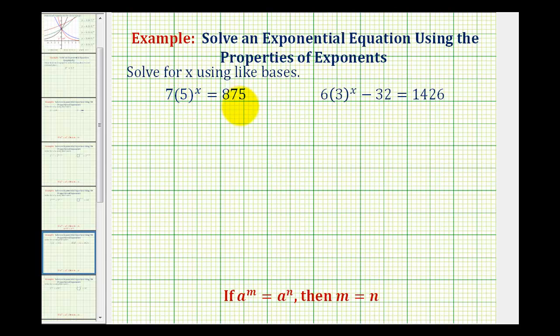If we can do this, then the exponents will be equal. In general, we say if a^m = a^n, then m = n. Again, if we have exponential expressions equal to each other with the same base, the exponents must be equal. So in our first example, the first step is to isolate 5^x.